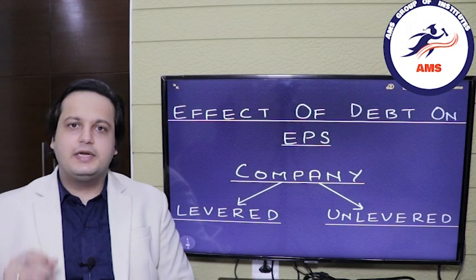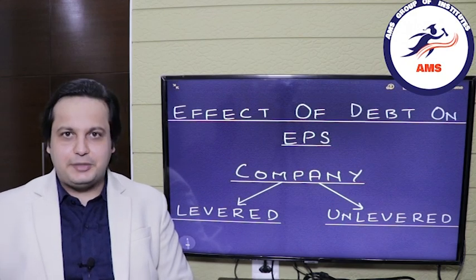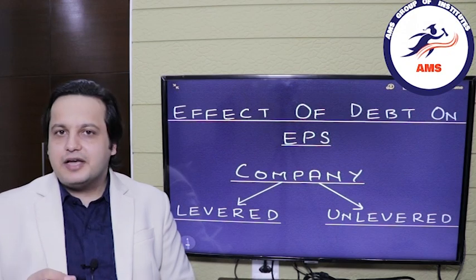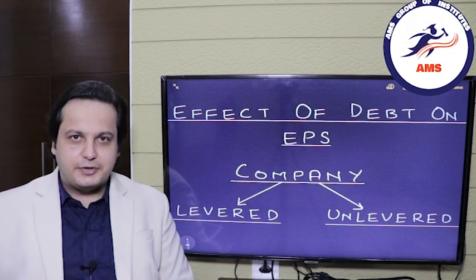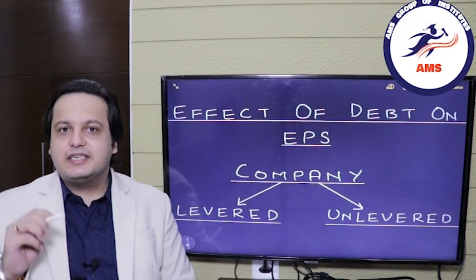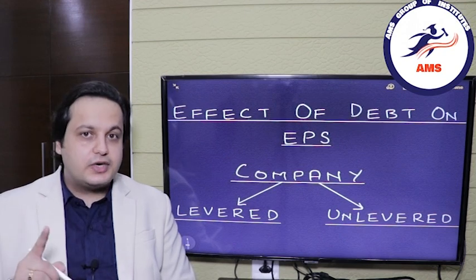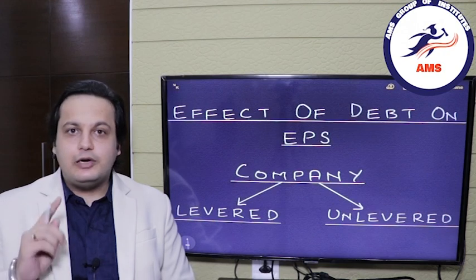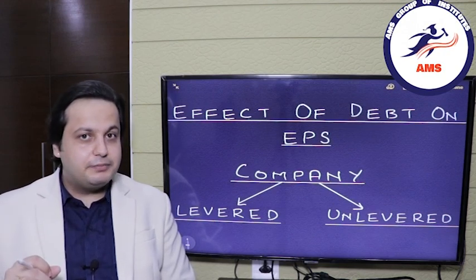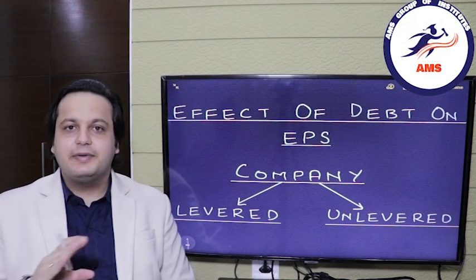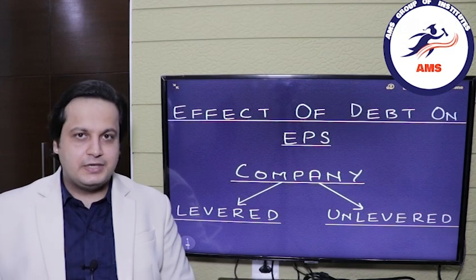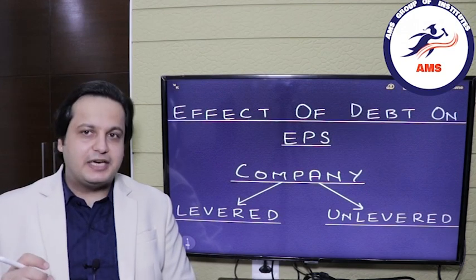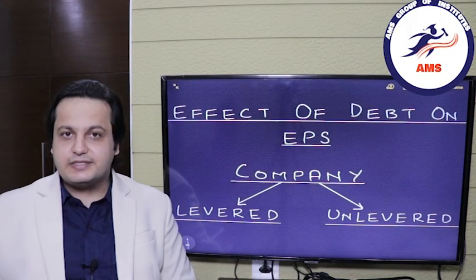Before we move forward towards the effect of debt on the EPS, let's firstly see what is a levered company and what is an unlevered company. A levered company is one in which the capital structure includes debt — that is, the capital structure has a loan. Unlevered companies are those whose capital structure has no loan. To calculate this, we first need to see what is EPS and what is the formula.